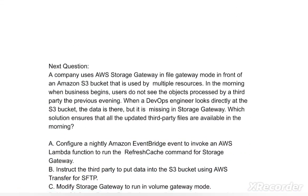Next question: A company uses AWS Storage Gateway in file gateway mode in front of an Amazon S3 bucket used by multiple resources. In the morning when business begins, users do not see the objects processed by a third party the previous evening. When a DevOps engineer looks directly at the S3 bucket, the data is there, but it is missing in Storage Gateway. Which solution ensures that all the updated third-party files are available in the morning?